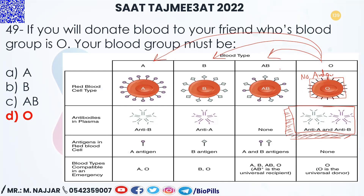If blood group AB donates to O, the AB blood has both antigen A and antigen B on the surface of the RBC, and the plasma of blood group O has both antibody A and antibody B, so blood coagulation will occur.